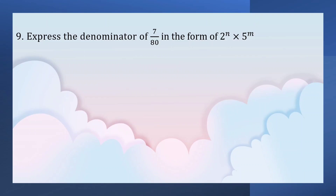Express the denominator of 7 by 80 in the form of 2 to the power of n into 5 to the power of m. The denominator is 80.